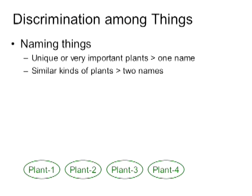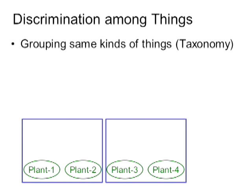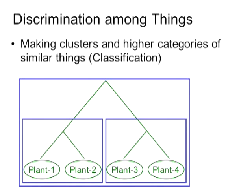Here we see illustrated a set of four plants, and we've assigned a name to each of them. We can next group these — plants one and two grouped together, and plants three and four grouped together. This is referred to as the taxonomy of the plant. We can then make higher-level classifications, where plants one and two form one group, plants three and four form another group, and these two groups together form a larger group containing all of those plants. You can imagine that this kind of system could go on and on, with many thousands of plants included within it.